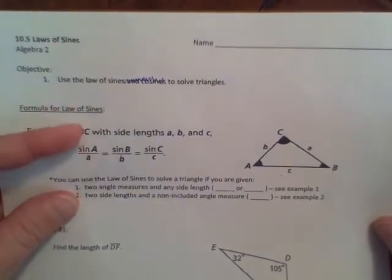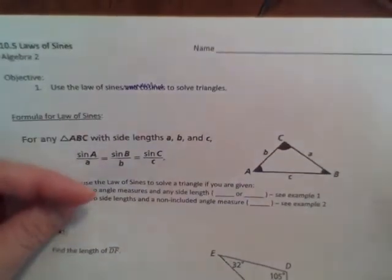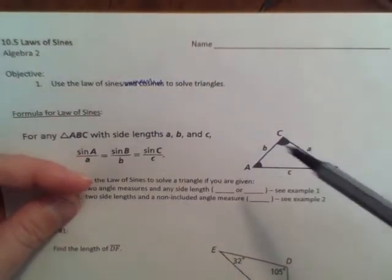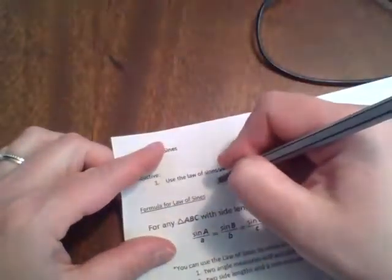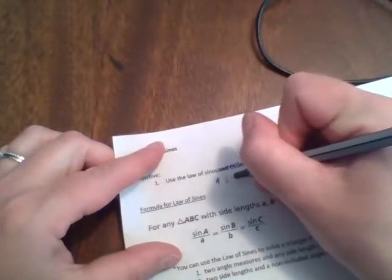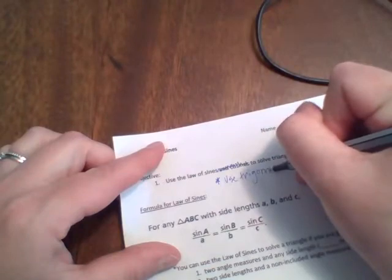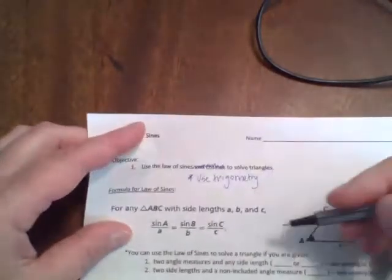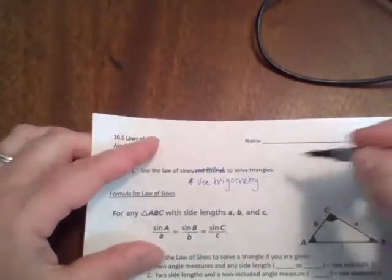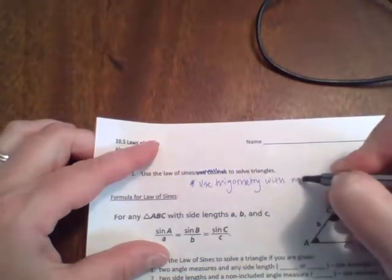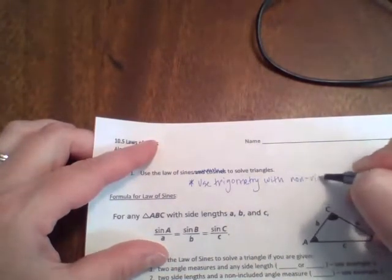So the idea of the law of sines is that you are going to use trig in order to solve a non-right triangle. So again, the basic idea of this is to use trigonometry, which up until now has only been allowed to use in right triangles, with non-right triangles.